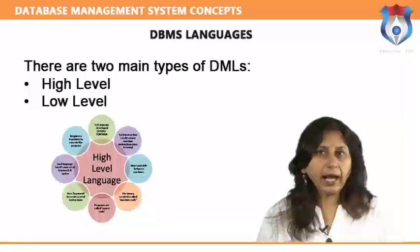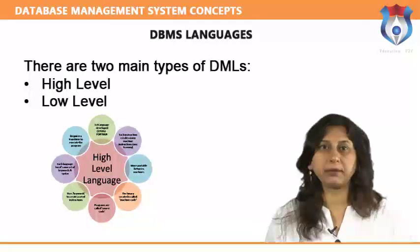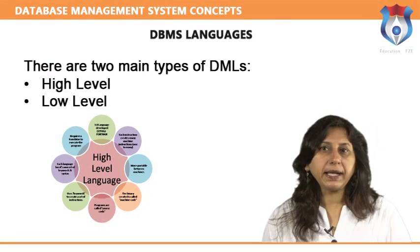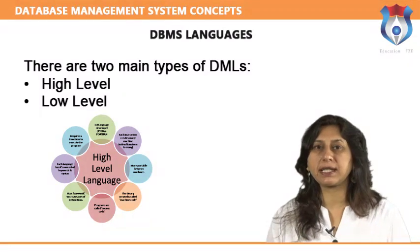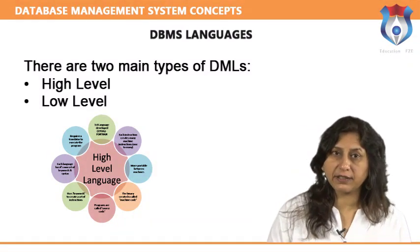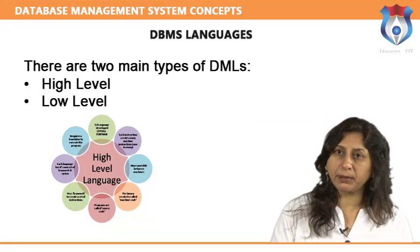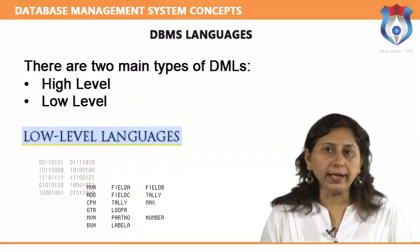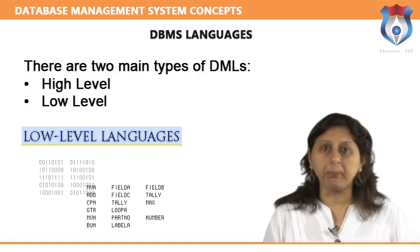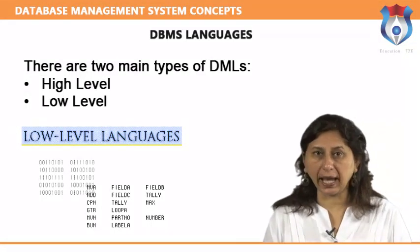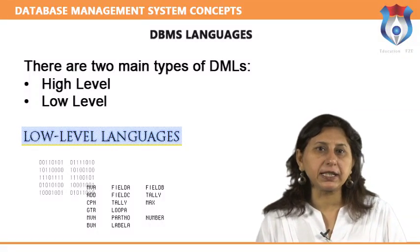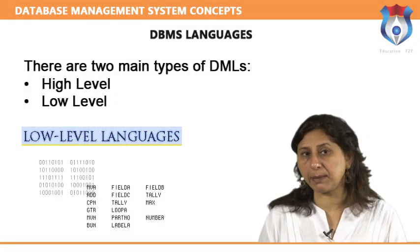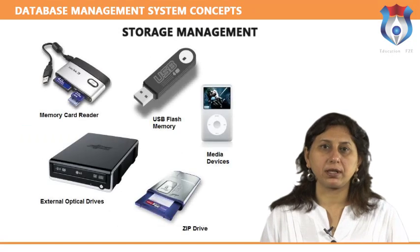High-level DML: a high-level or non-procedural DML can be used on its own to specify complex database operations concisely. Many DBMS's allow high-level DML statements to be entered interactively from a display monitor or terminal, or to be embedded in a general-purpose programming language. Low-level DML: a low-level or procedural DML must be embedded in a general-purpose programming language. This type of DML typically retrieves individual records or objects from the database and processes each separately.